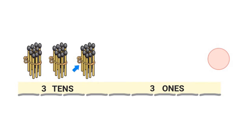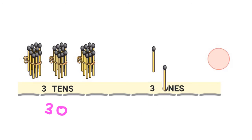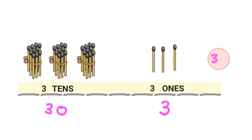33 matchsticks in all. Here I have 3 tens — I know that 3 tens is 30. And here I have 3 ones. Let me draw 3 ones: 1, 2, 3. So I have 3 ones — 30 and 3 is 33. I have 33 matchsticks in all.